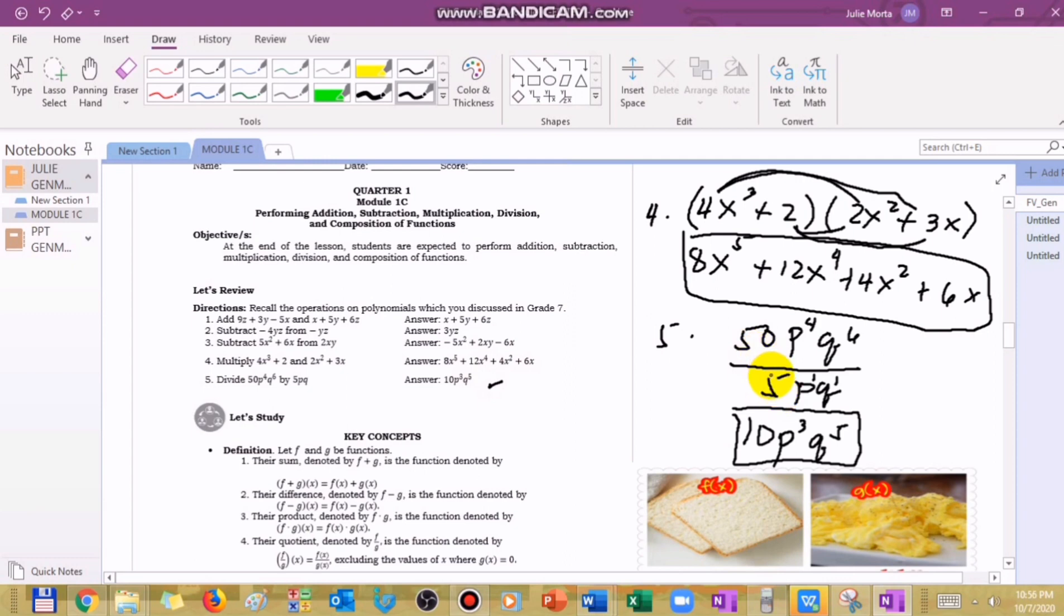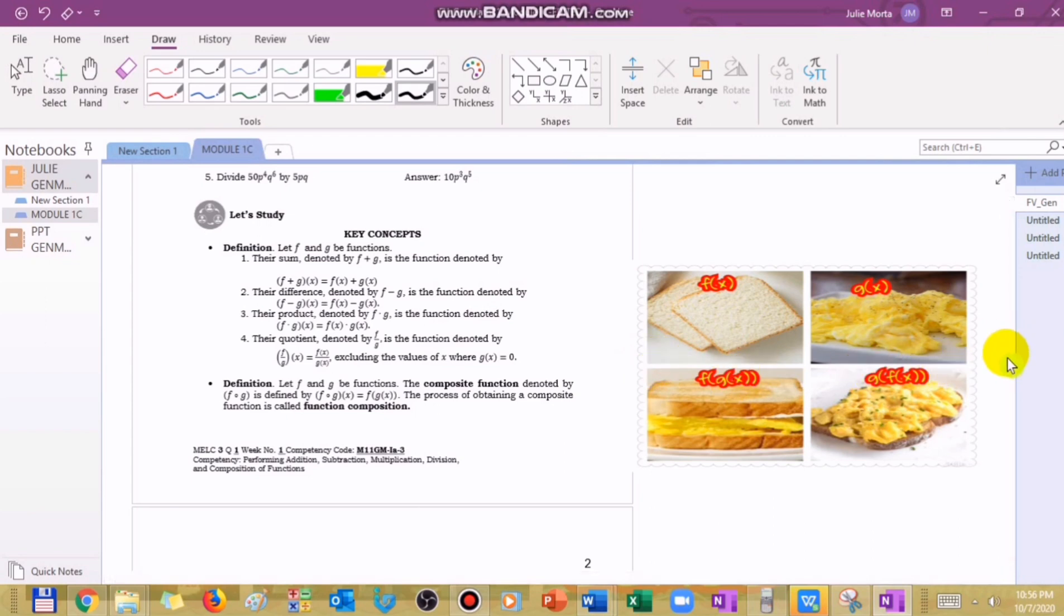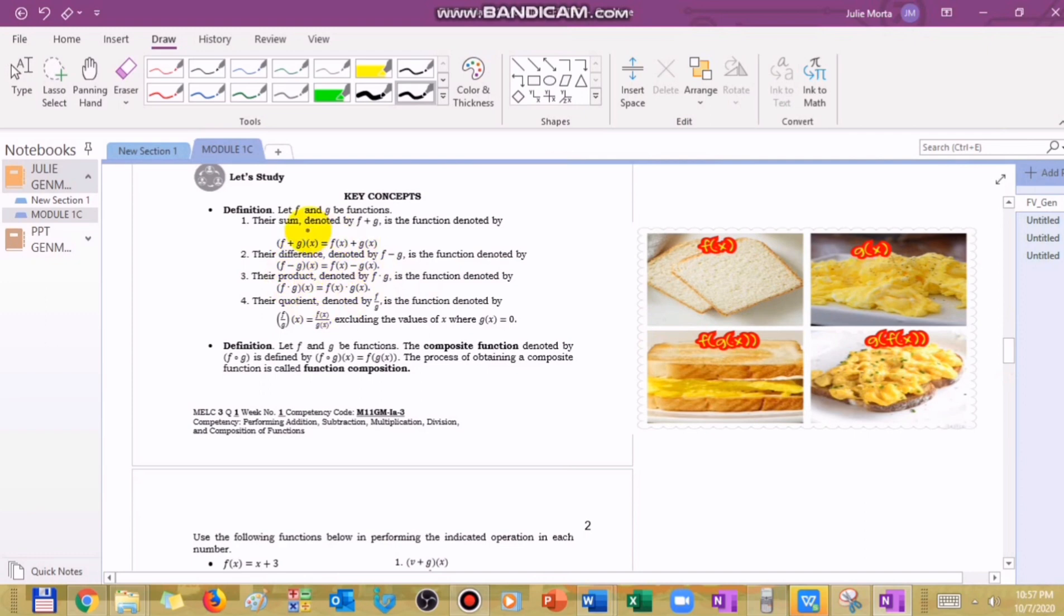Let's proceed to the key concept. In the key concept of module 1, notice the definitions of how to add or get the sum, difference, product, and quotient of functions. For the quotient, excluding the values of x where g of x is equal to 0. The denominator cannot be zero. Why? Because if the denominator is zero, automatic the function is undefined. So we don't allow numbers that make the denominator zero.